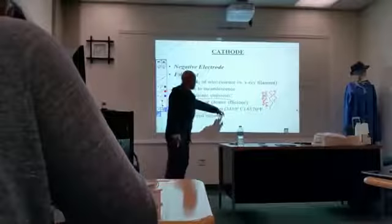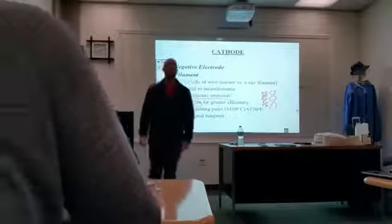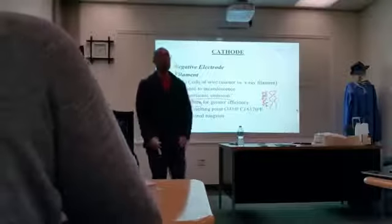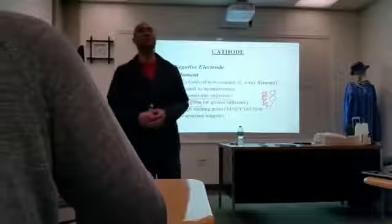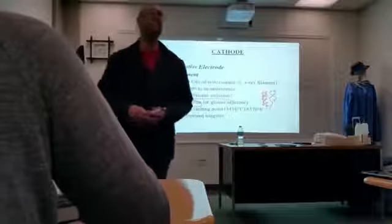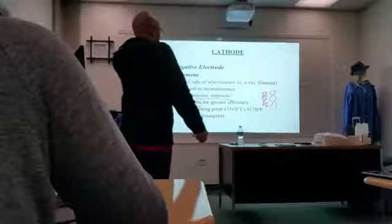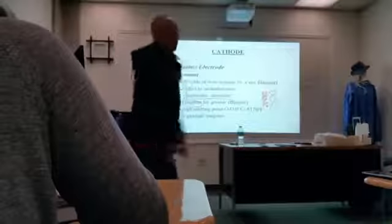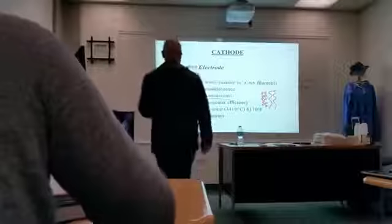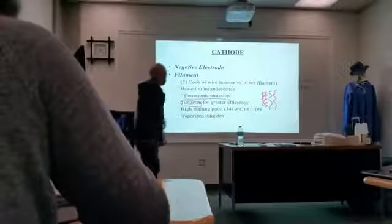Tungsten has a high melting point of about 3,400 degrees Celsius, or 6,100 degrees Fahrenheit. That's a lot of heat it can deal with, so tungsten is the material of choice.